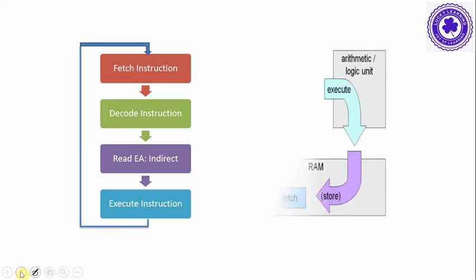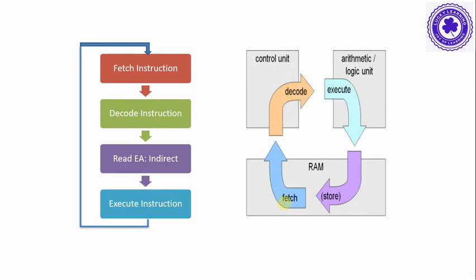Instruction fetch retrieves an instruction from memory, then the control unit decodes the instruction and assigns control signals to various parts of the computer so that the computer can execute the instructions in the ALU circuit. Once execution is completed, the result will be stored back to memory. This is repeated for each instruction until the end of the program.